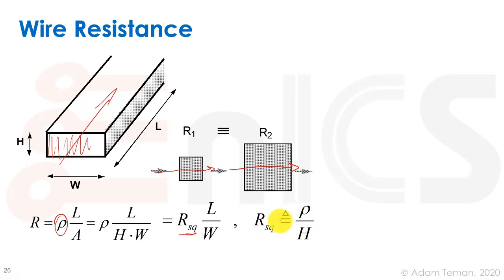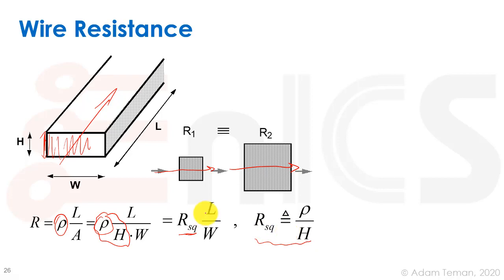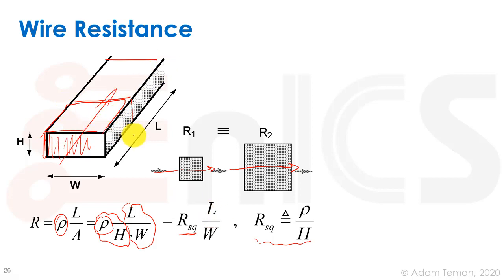R-square is defined as ρ divided by h. This is a constant because the height is given by the technology — it's not a design factor, nor is rho. So R-square is a constant for a certain type of metal layer or conducting layer. All we have to do is multiply R-square times L over W, which is the number of squares we have in the design.